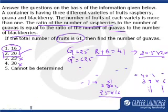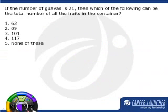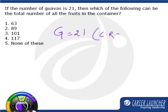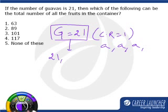If I look at the next question, which says the number of guavas is 21, then which of the following can be the total number of all fruits in the container? Very simple. Since one of the values, guavas, is 21, we know one geometric progression can have common ratio equal to 1. That means the three terms could be A, A, and A. If G is 21, my three terms in the series could be 21, 21, and 21, and my answer can be straight away 63.